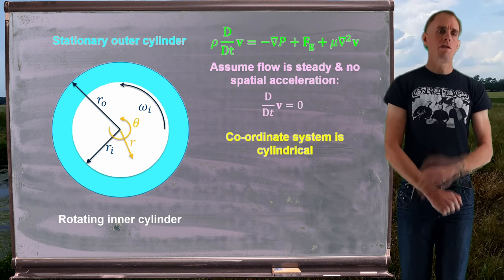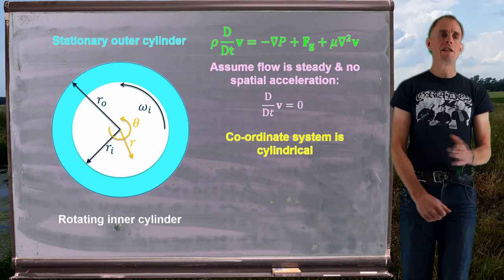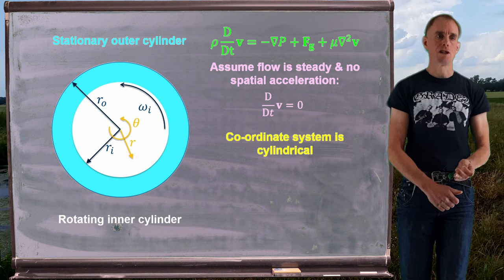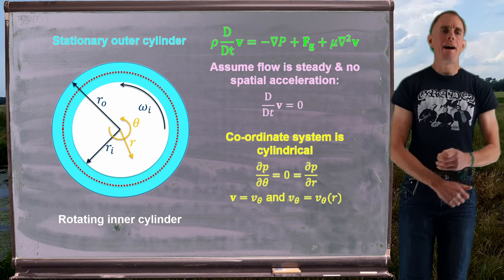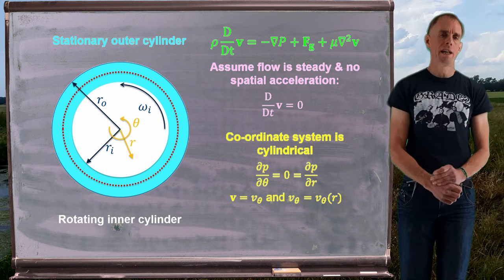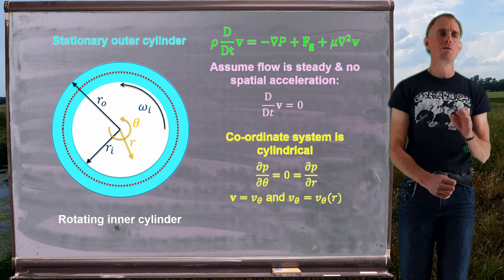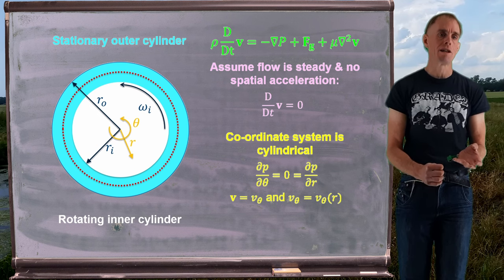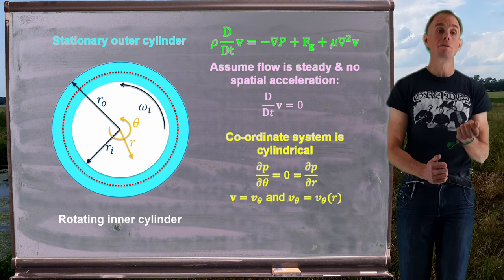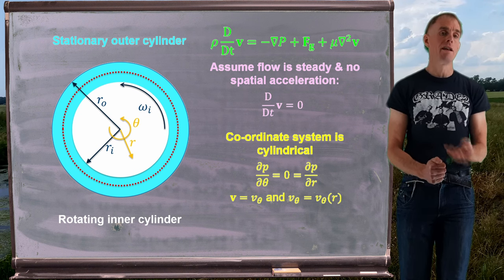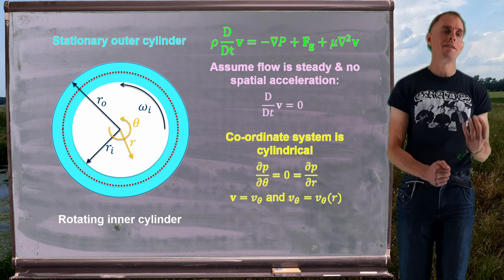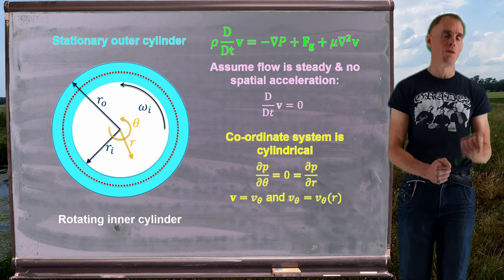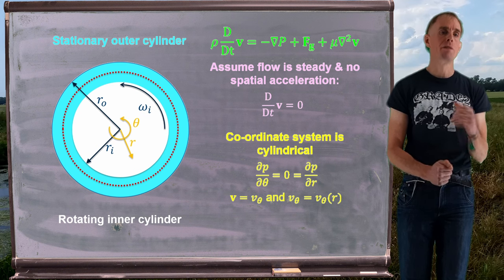My coordinate system of choice is cylindrical. I'm going to measure radii from the center of the inner cylinder and measure circumferential movement in the theta direction. Thinking carefully about velocity components: I have an angular velocity of my inner cylinder going counterclockwise in the theta direction. The only velocity I'm going to assume is in the theta direction following that angular velocity. Moreover, since the inner cylinder is rotating and the outer cylinder is stationary, v_theta only varies as a function of radius through the gap.